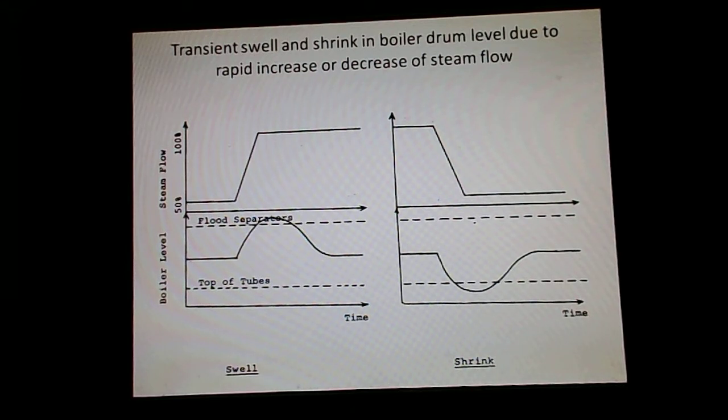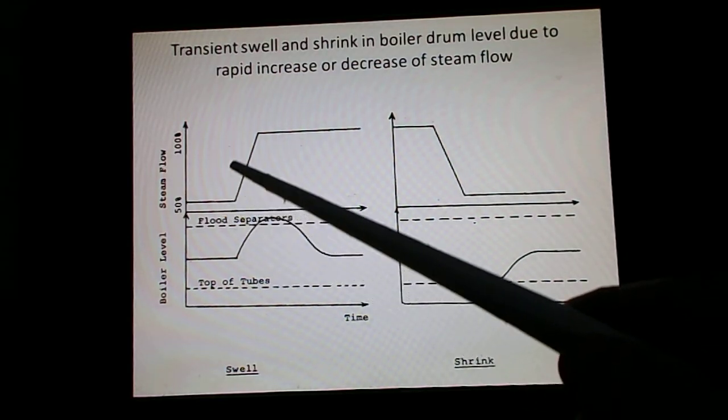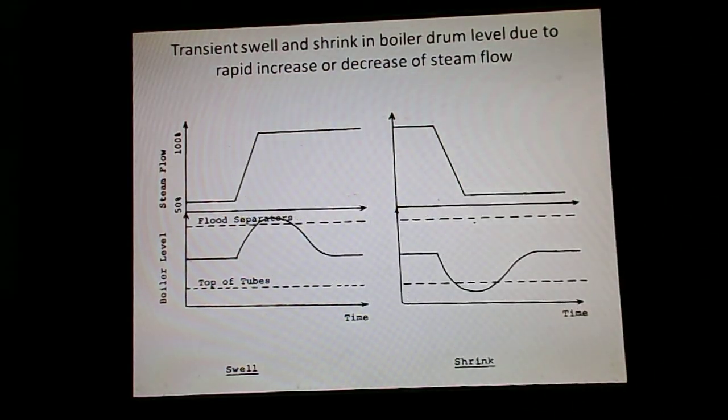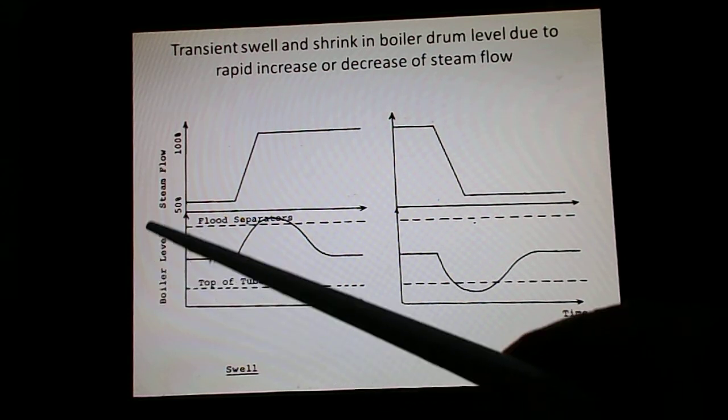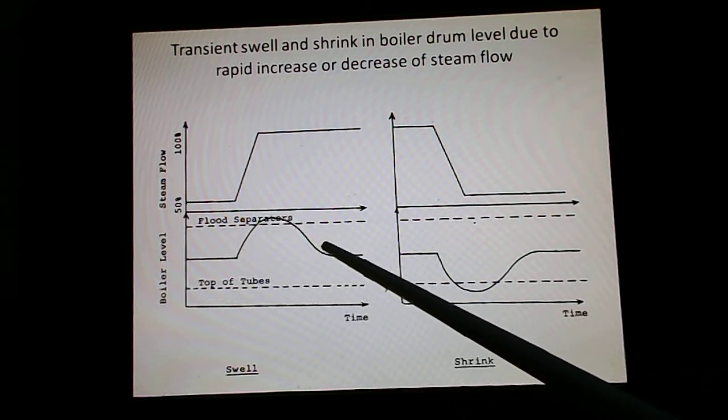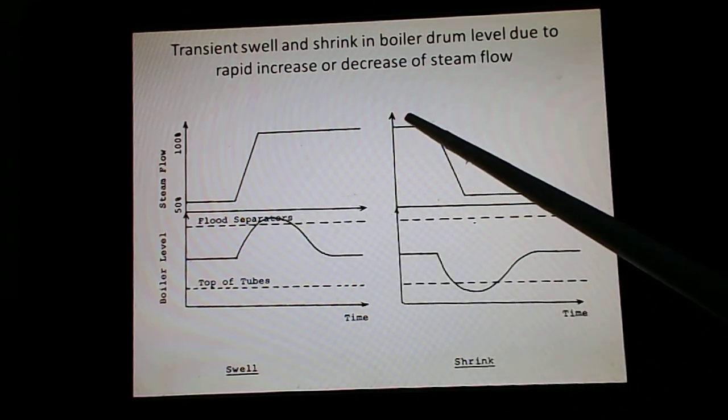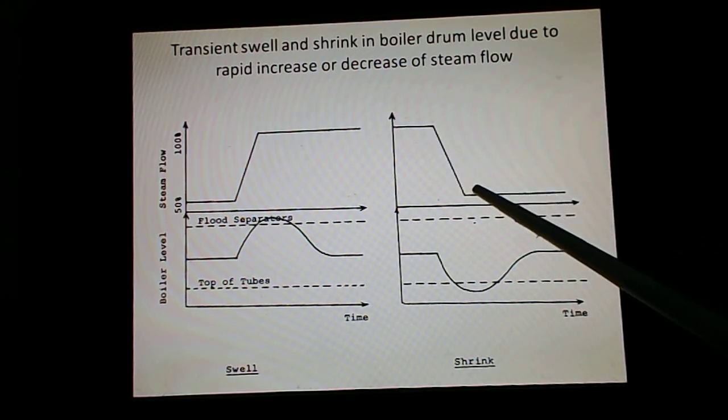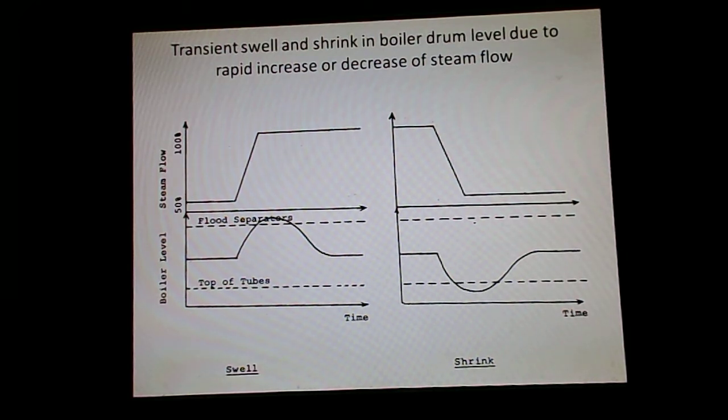Here is the graphical representation. Here we are having 50% steam flow which suddenly increases to 100%. So, as already discussed, there will be a swell in the boiler level. The boiler level has increased in a transient manner. And in this diagram, there is a sudden decrease of steam flow, because of which there is a shrinkage in the boiler level. So, I hope you have understood boiler swell and boiler drum level shrink.